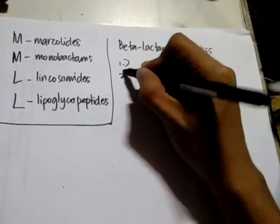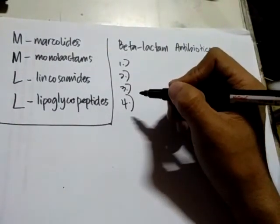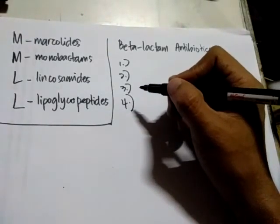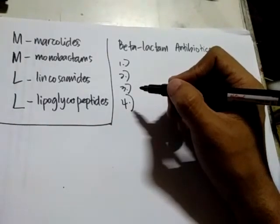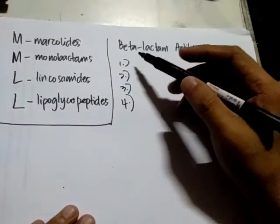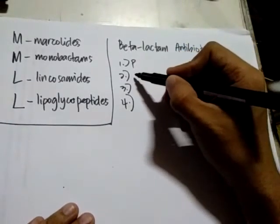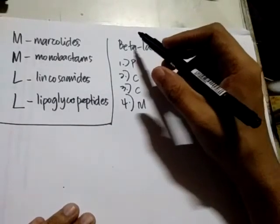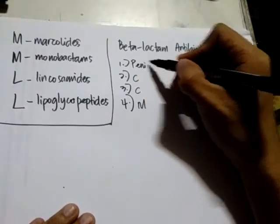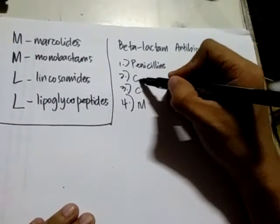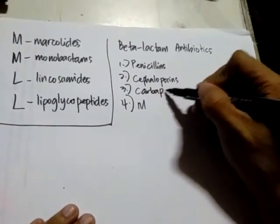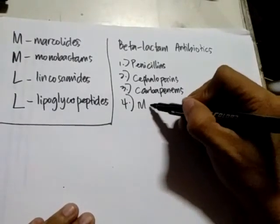The four beta-lactam antibiotics are represented by the mnemonic PCCM. P stands for penicillins, the first C for cephalosporins, the second C for carbapenems, and M for monobactams. These antibiotics all share a beta-lactam ring structure.